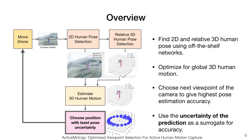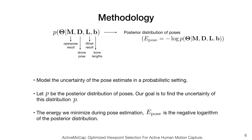However, we cannot define the utility function in terms of pose estimation accuracy because doing so would require knowing the true person and camera position, leading to a chicken-and-egg problem. Instead, we use the uncertainty of the prediction as a surrogate for accuracy.